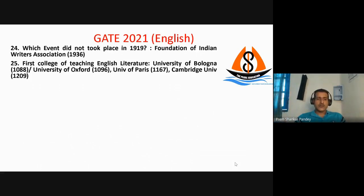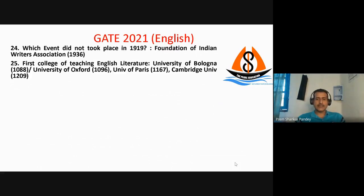There was another question about the first college of teaching English Literature in the world. The right answer is the University of Oxford, founded in 1096, since the University of Bologna — founded in 1088 — was not among the options. The University of Paris was third in 1167 and Cambridge University was fourth in 1209.